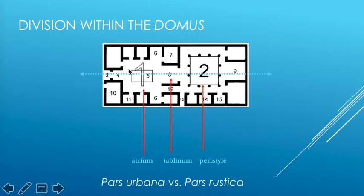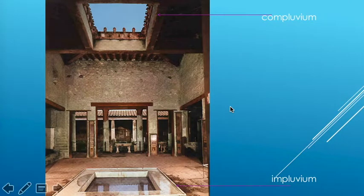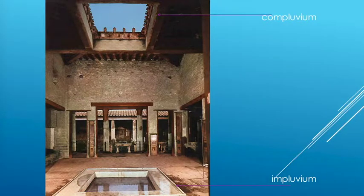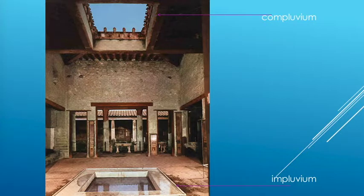We see strict division: clients only make it as far as the atrium, while friends and family members make it all the way through to the peristyle. The Roman townhouse utilizes an unusual arrangement for admitting light and air: the atrium has an opening in the roof called the compluvium, and a corresponding pool to capture rainwater, the impluvium. Otherwise this room would be very dark as it has no windows. This arrangement allows for light and air, with the added benefit of water collected in a tank underneath the impluvium for household use.